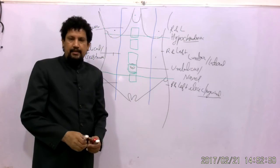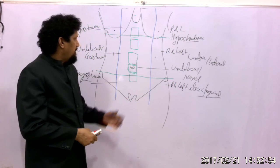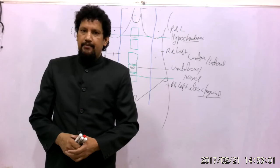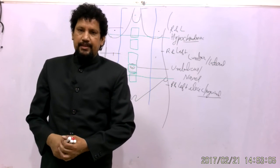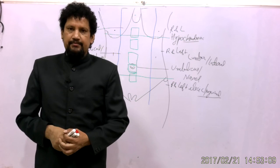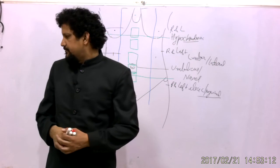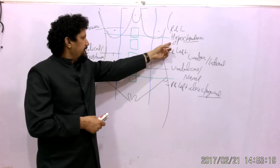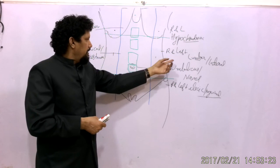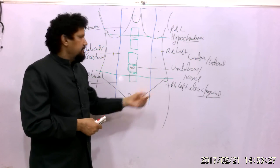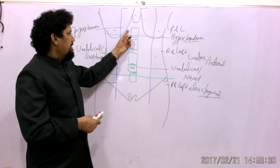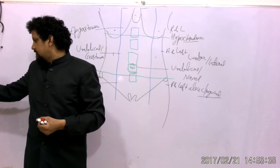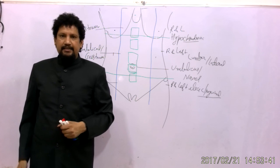In summary, the anterolateral abdominal wall is divided into nine imaginary regions to describe the viscera of the peritoneum and their relations. These nine regions are: the right and left hypochondriac, the right and left lumbar, the right and left iliac, the epigastric region, the umbilical region, and the hypogastric region.